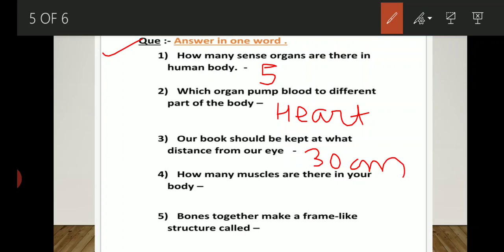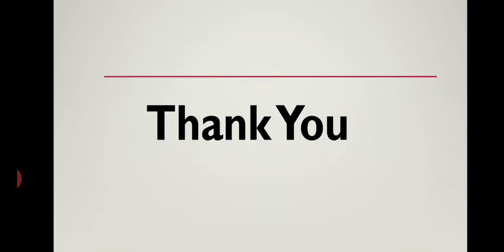Fourth, how many muscles are there in your body? There are 650 muscles in our body. Last, fifth one. Bones together make a frame-like structure called skeleton. Thank you.